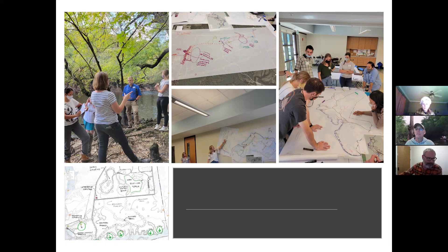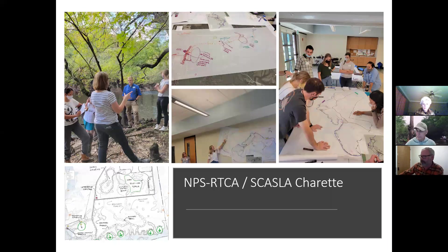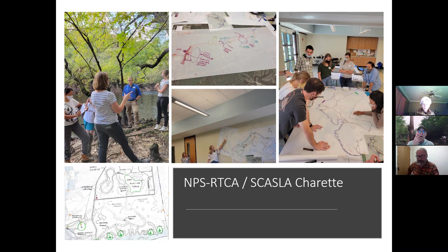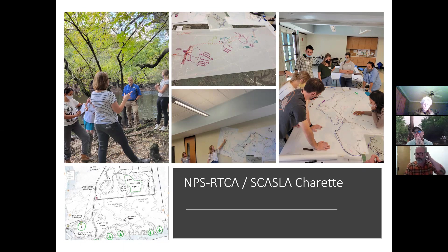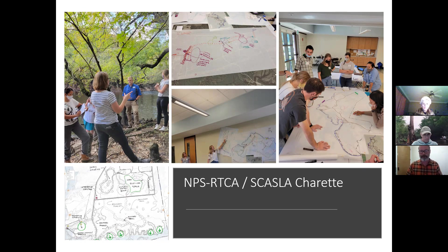A significant portion of our analysis and design came from interactions with the National Park Service and landscape architects from around the state in a two-day charrette — a focused, collaborative design session. This charrette included members of the professional community, our consultant team, the steering committee, and participants from Clemson University's third-year landscape architecture studio, who took this corridor on as a project. Their input is being incorporated into the final report and plans for this project.